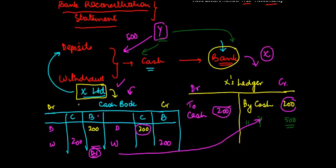But, because maybe X is not aware, he does not write anything over here. So, while in the books of X, the balance is 200, in the books of bank, the balance is 700.